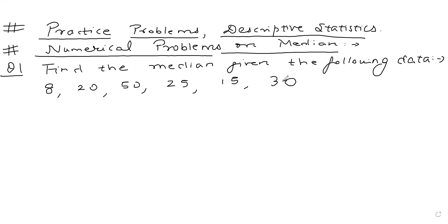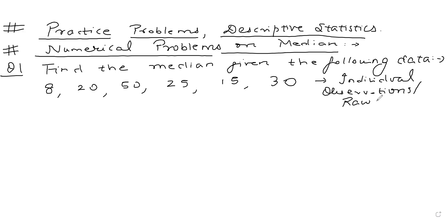Whenever numericals come regarding mean, median, mode, or dispersion, students should first be able to identify what kind of data set this is. This is a raw data set, or individual observations. There are three kinds of data sets: individual observations or raw data, discrete frequency distributions, and continuous distributions with class intervals. Looking at this data, it's individual observations — raw data. How do I find the median?